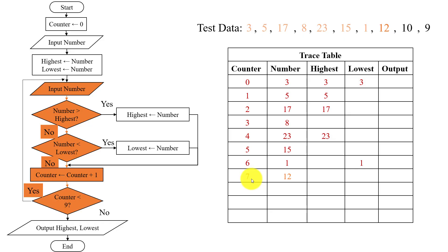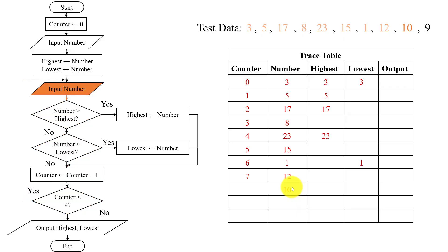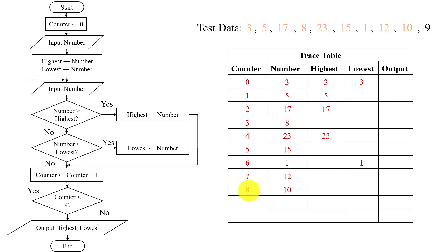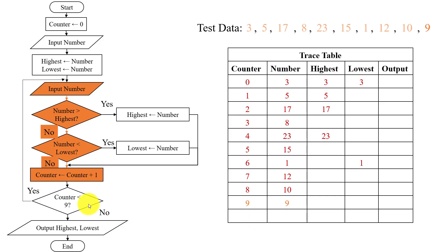7 is less than 9 — yes. Input another number, which is 10. 10 will be placed here. Now 10 is greater than 23 — no. 10 is less than 1 — no. Increment the counter and it will be 8. It is less than 9 — yes. Input another number, which is 9. 9 will be placed here. Now 9 is greater than 23 — no. 9 is less than 1 — no.